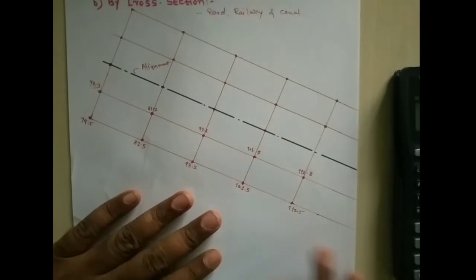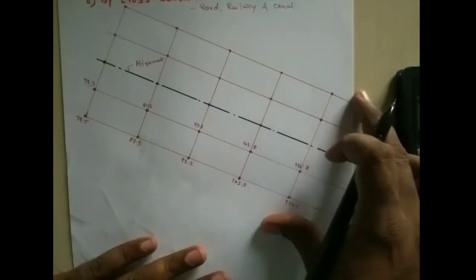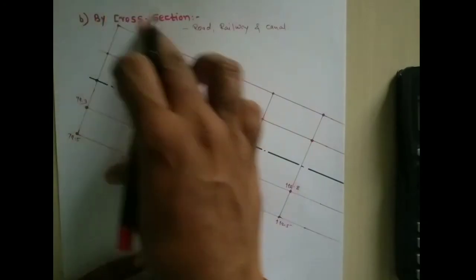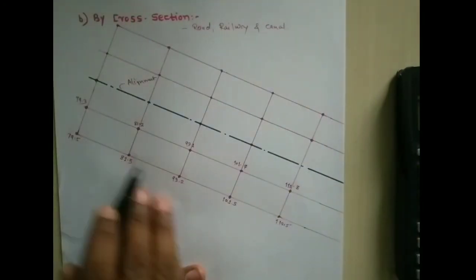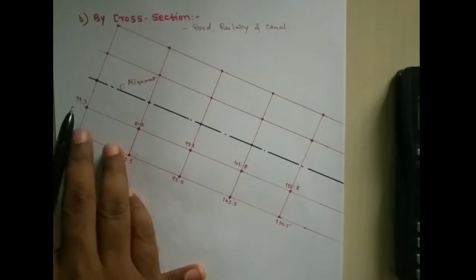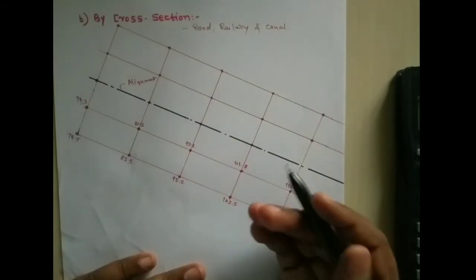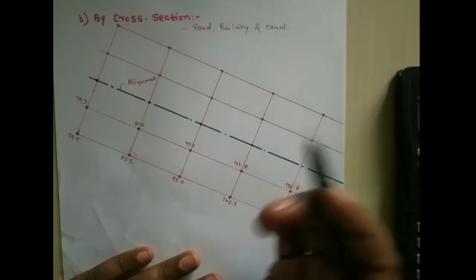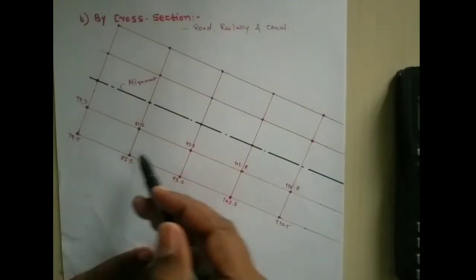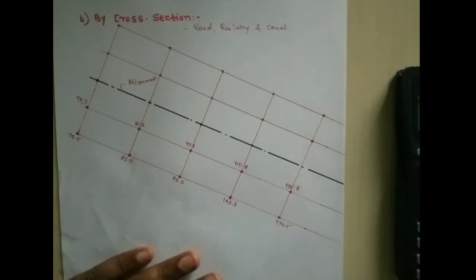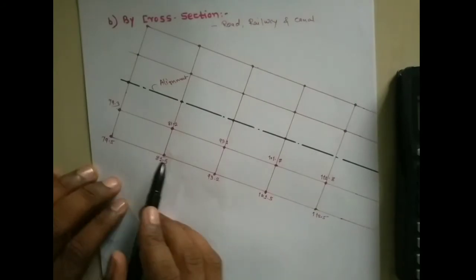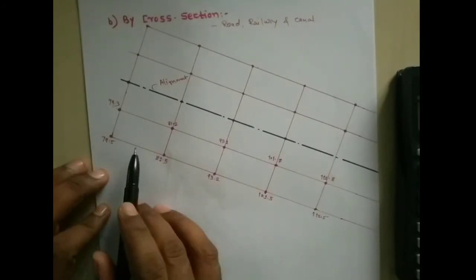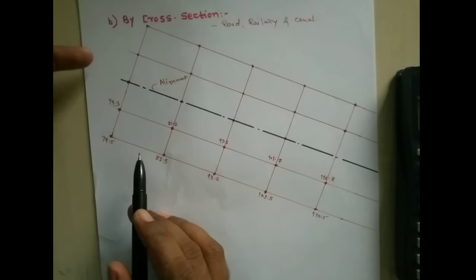What I have done here is that this particular route I have divided in square or rectangular shape. At all the dark-colored spots we have benchmarked, and at all points we have determined the particular RLs at each point by the height of instrument method or the rise and fall method.